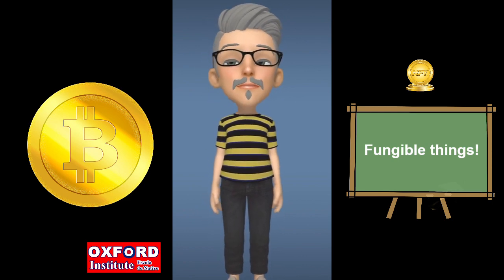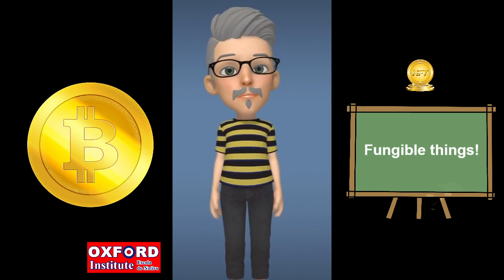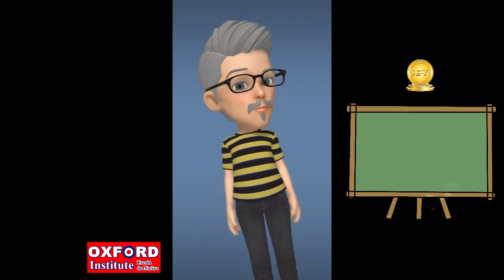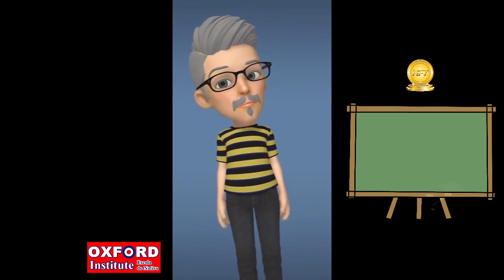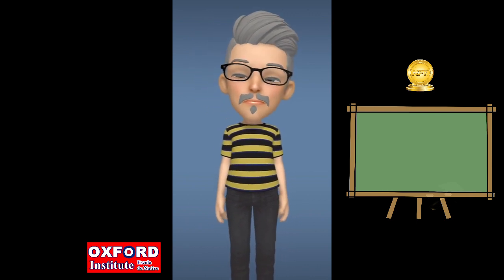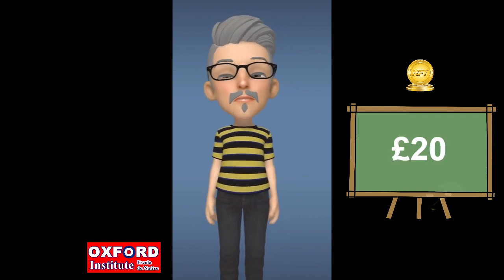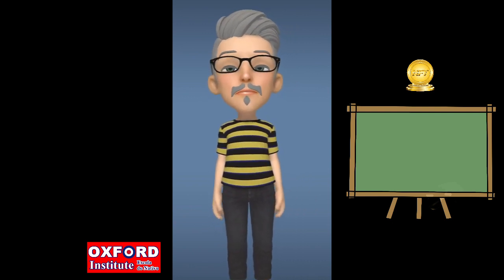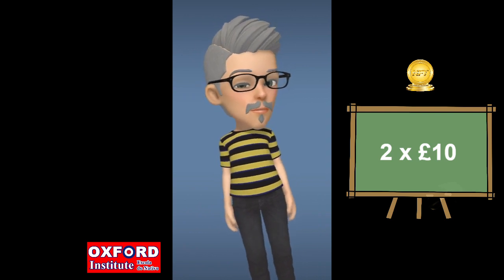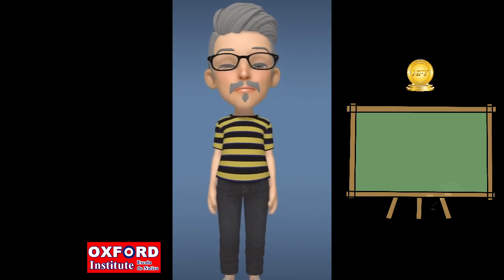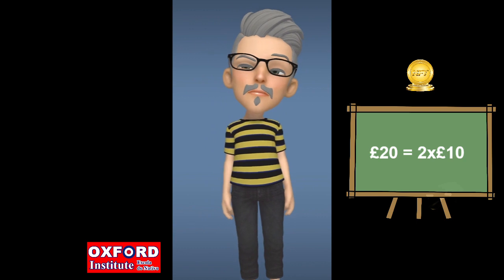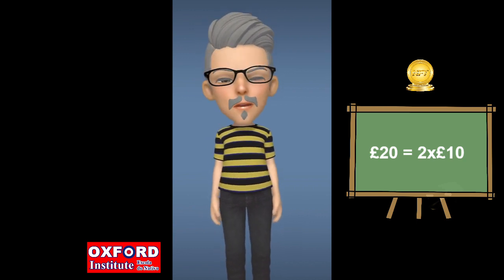They're fungible because we can buy them, sell them, and exchange them for something of the same value. You can buy some Bitcoins for the going market price, which, by the way, isn't very much these days — I imagine some people have lost a lot of money buying Bitcoin. For example, imagine I gave you a £20 note and you gave me two £10 notes. Those two things have the same value, so we're both happy with the exchange because they have equal value.